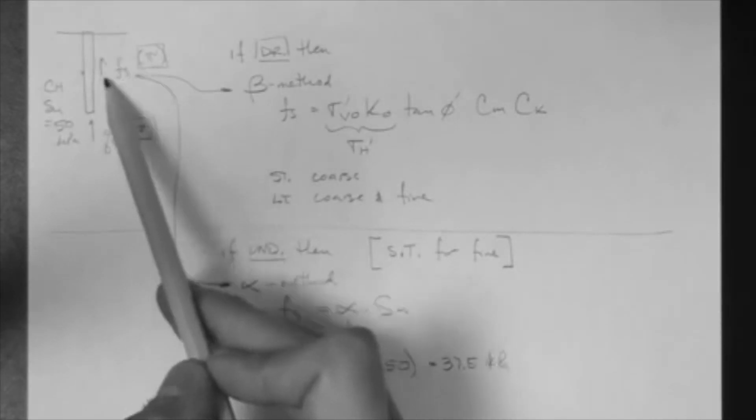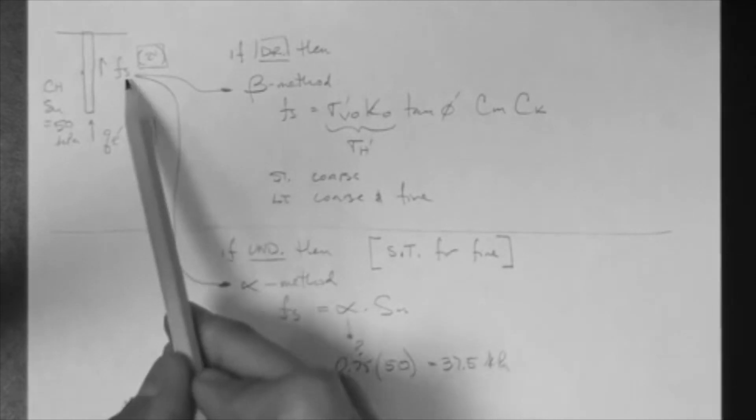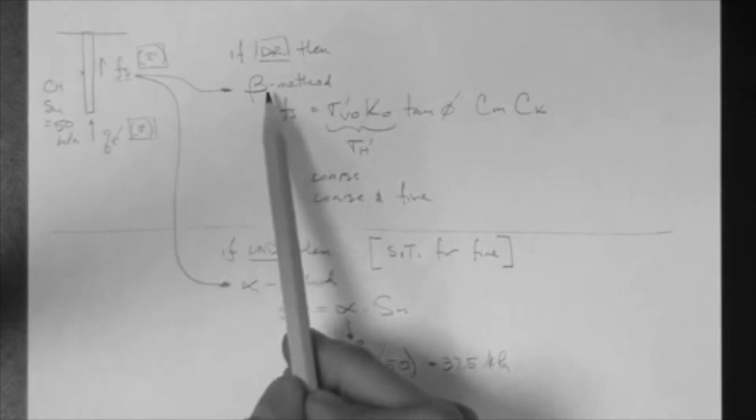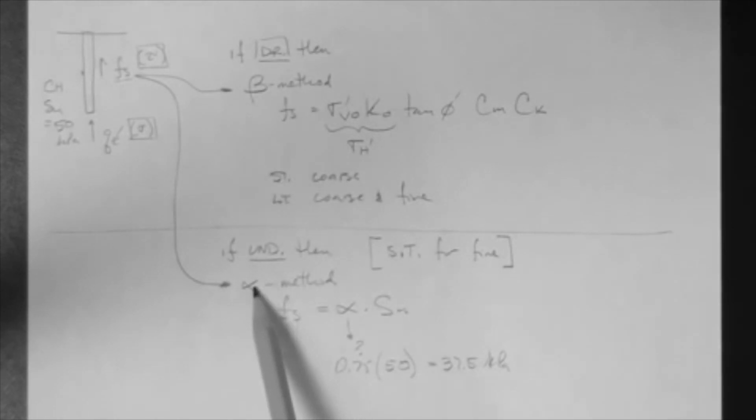The capacity, the full capacity, is derived from the side friction resistance and the end bearing resistance. To get Fs, we have to use either the beta or alpha method. To get Qe, we have to use different methods.